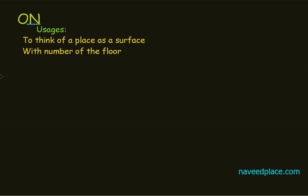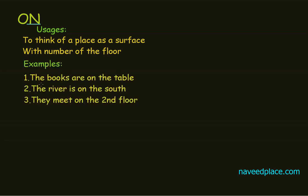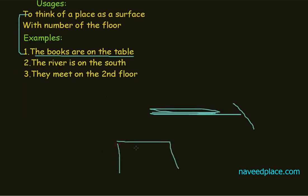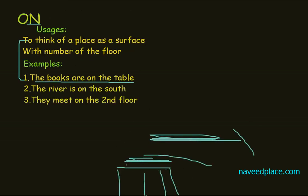Now it's time to see the examples of ON. The first example is: the books are on the table. So the first usage is to think of a place as a surface. For example, if this is a table, I am thinking this place is a surface. Whenever we think any place is a surface, we use ON. Here we have the example: the books are on the table.